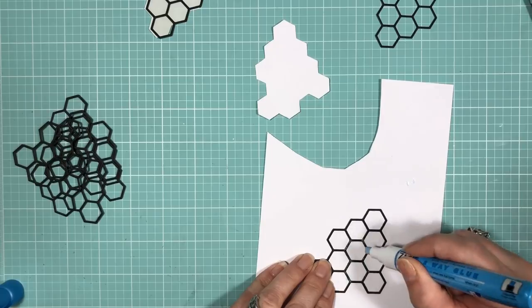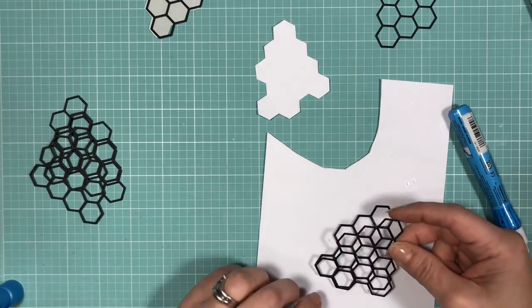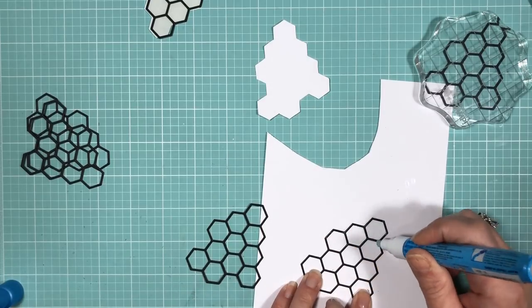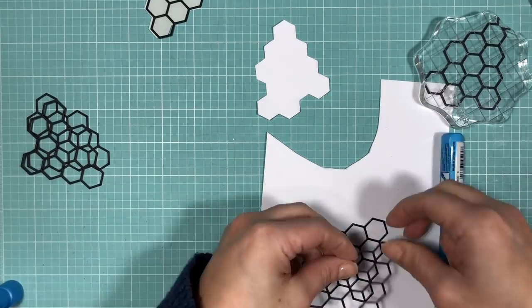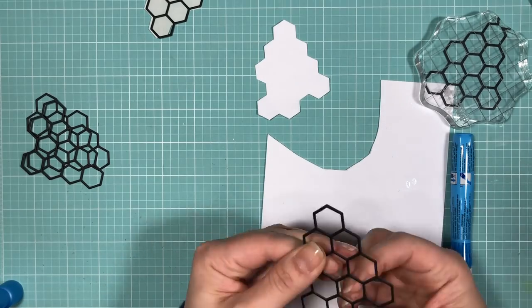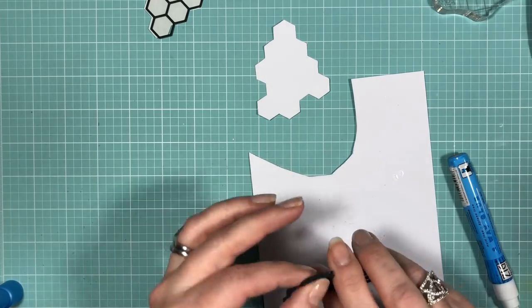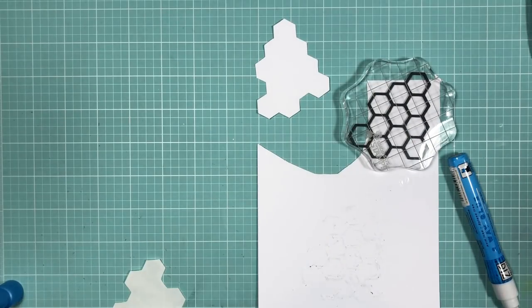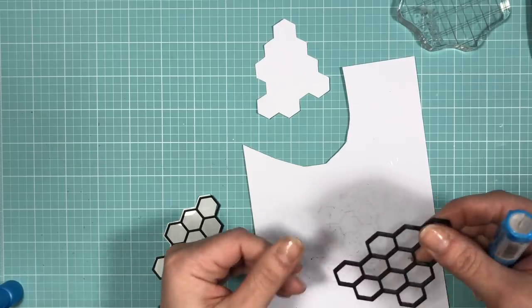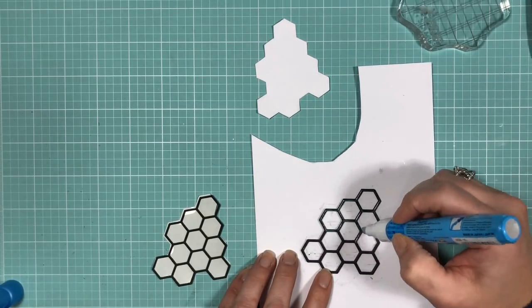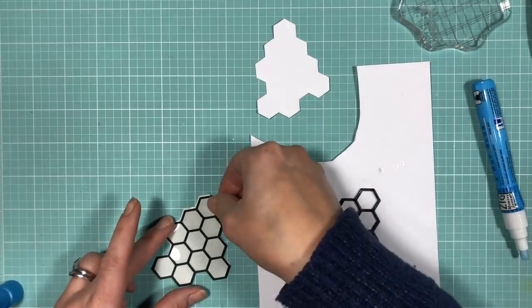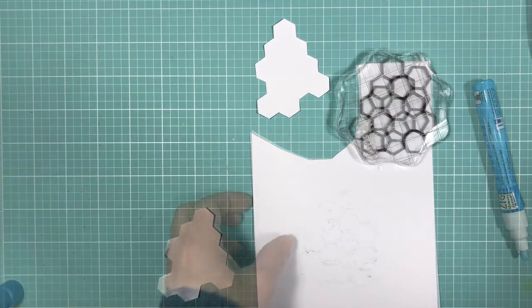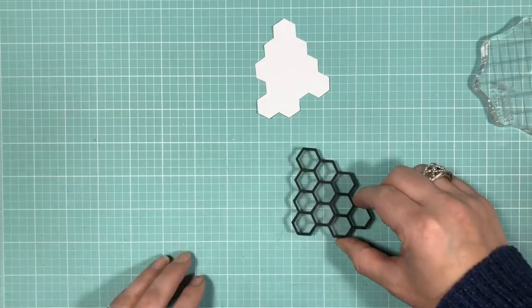To glue my layers together I'm using a zig two-way glue pen and basically painting it on and gluing two layers at a time. Once all the double layers are dry I will then glue them all together.